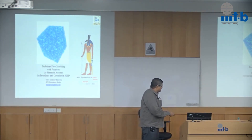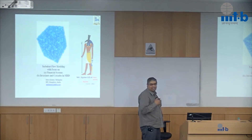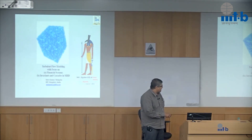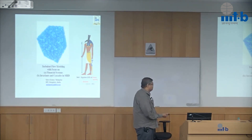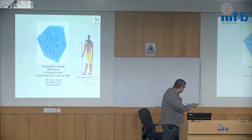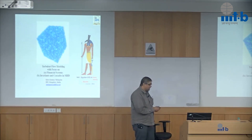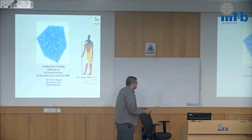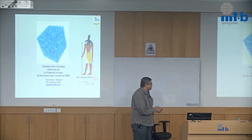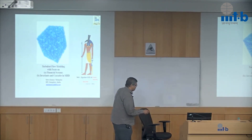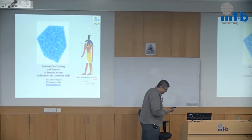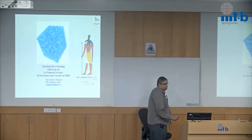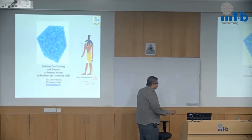Before I start my talk, you might be wondering why that figure is sitting there. This is the Egyptian god of chaos, storms, and disorder. Even Egyptians realized that the properties of chaos, storms, and disorder — which are non-linear in nature — are so difficult that they had to invoke a god for that, named Seth. That is the kind of problem turbulence has been. It has not been cracked; it's one of the classical problems, right from Heisenberg to von Neumann to Feynman.